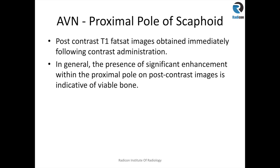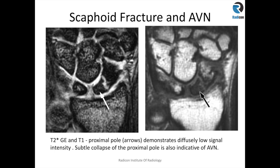To further assess viability, you can do post-contrast T1 weighted fat-sat sequences to see if there is enhancement in the proximal pole, which would indicate blood supply and confirm the proximal pole is still viable, guiding surgical planning. This case demonstrates likely AVN on the basis of MR findings. On T2-star gradient echo, there is low signal intensity in the proximal pole, and diffuse low signal intensity on T1 weighted images. Patchy fat signal is present within the distal pole and other carpal bones, but the proximal pole is diffusely low T1, meaning almost all the fat is gone and this is unlikely to be a viable proximal pole.